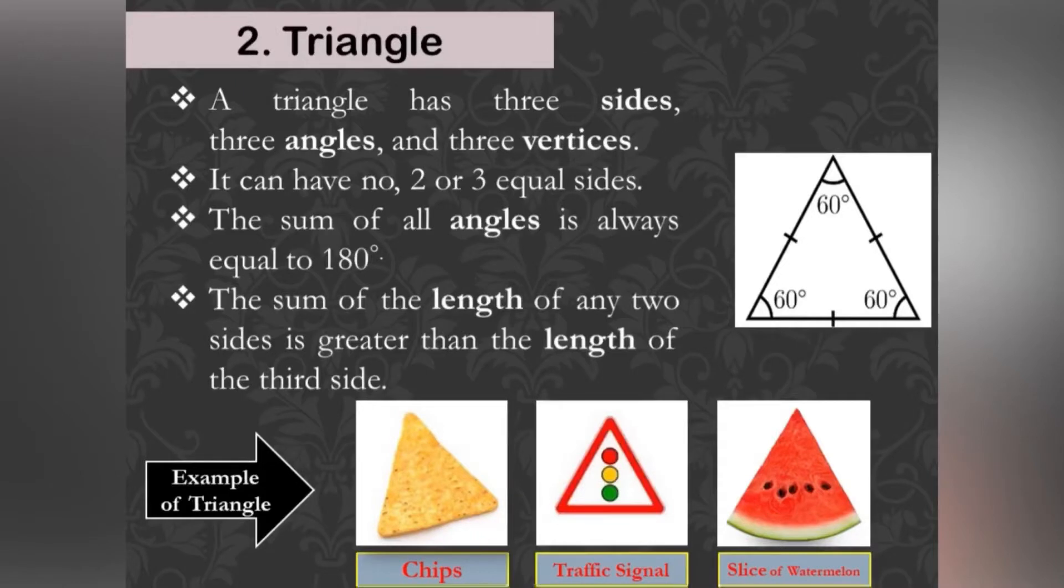Triangle: A triangle is a simple closed curve or a polygon which has three sides, three angles and three vertices. Its sides can be or cannot be equal.